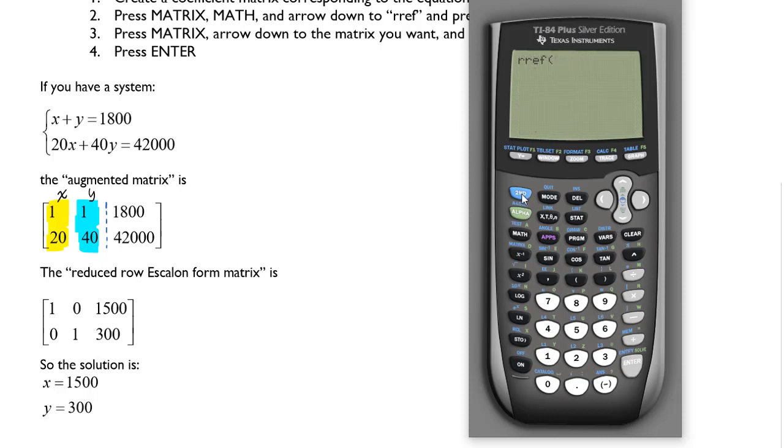And then we need to find the matrix to put in there, so we'll do second MATRIX. And we edited matrix A, so we'll select matrix A, and then hit ENTER. And we can see that we get the same row reduced echelon form as what's given here.